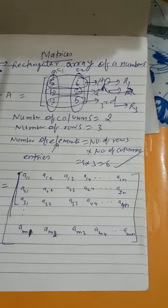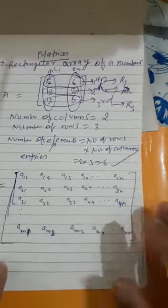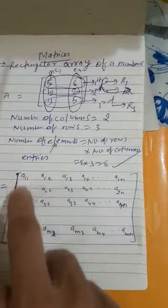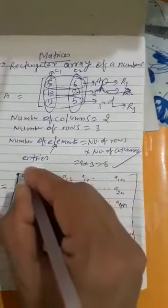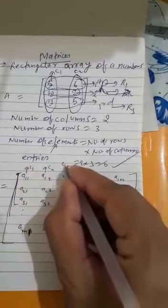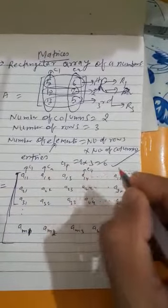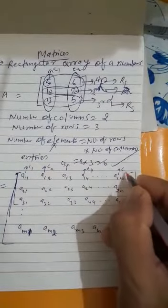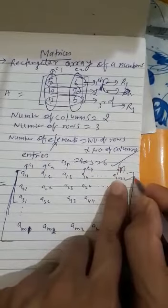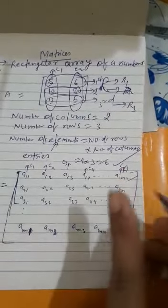Let you know what is the meaning of order of a matrices. First of all, I would like to show how many columns and how many rows. See over here, this one is first column C1, this one is second column, this one is third column, this one is fourth column, up to n column because this one is n column Cn.